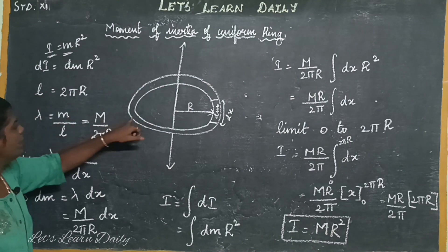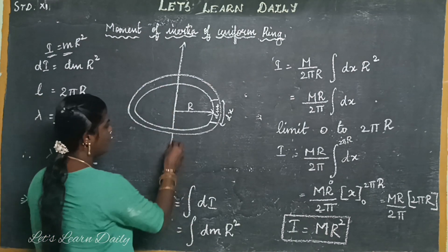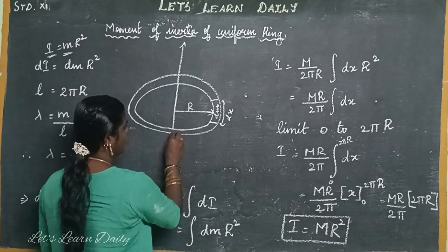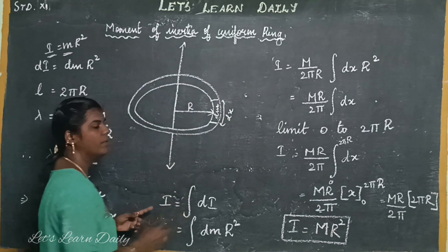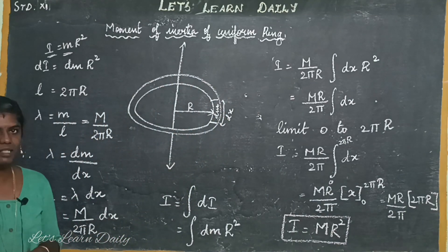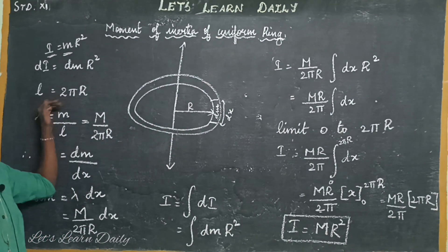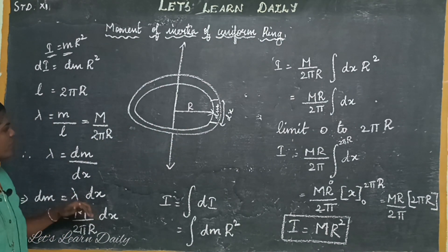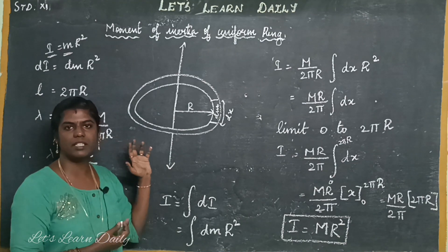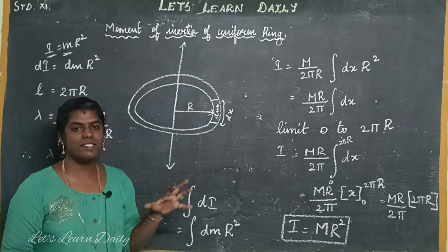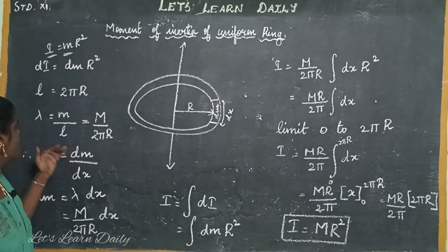Now, if you have a ring, you can start with the origin. You can go around the whole ring. The circle is equal to the circumference. So the circumference of the ring is equal to 2πr. You can then start with the density — the linear density. Linear mass density is lambda.